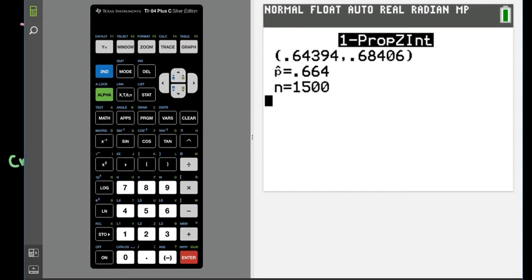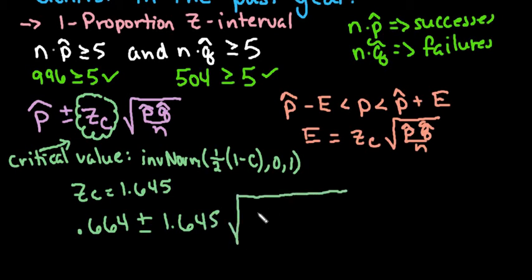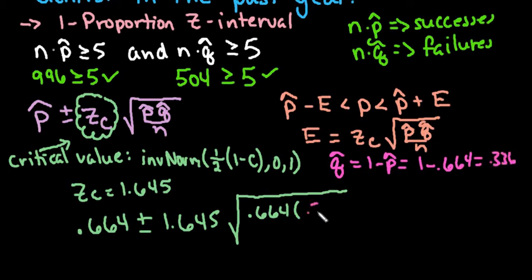Now I can write down all of my work if I needed to. I could say 0.664 is going to be p̂ plus or minus 1.645 times p̂ which is 0.664 times q̂, which remember q̂ is always 1 minus p̂, so in this case if I do 1 minus 0.664 I get 0.336, and then I would divide it by the number in my sample 1500. This way you showed work so that whoever is assessing it can see that you found the correct critical value.